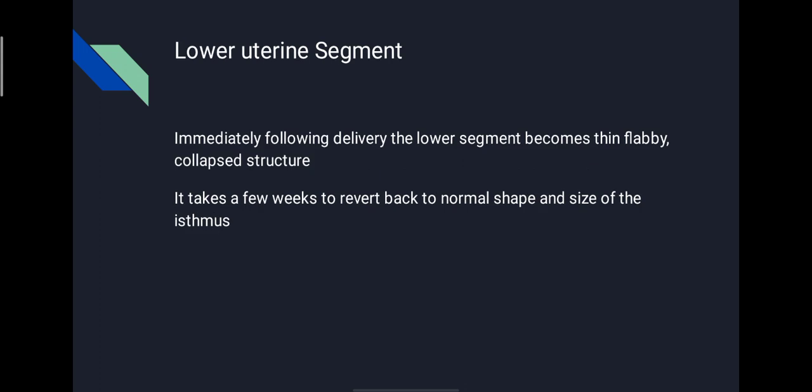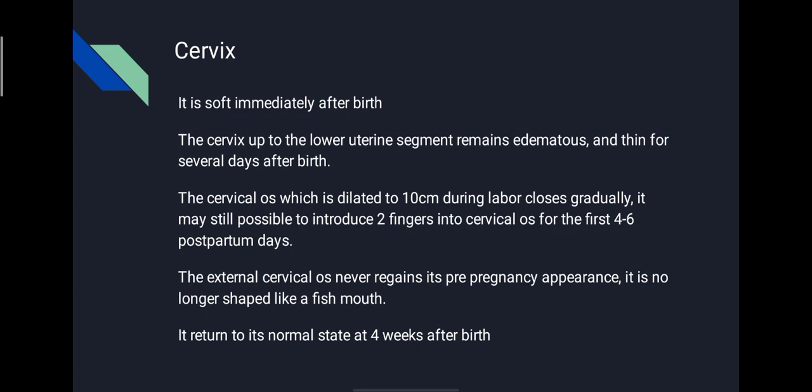Involution of the lower uterine segment: immediately following delivery, the lower segment becomes thin, flabby, and a collapsed structure. It takes a few weeks to revert back to the normal shape and size of the isthmus. Involution of the cervix: it is soft immediately after birth. The cervix up to the lower segment remains edematous and thin for several days after birth. The cervical os, which is dilated to 10 cm during labour, closes gradually. It may still be possible to introduce two fingers into the cervical canal for the first 4 to 6 postpartum days. The external os never regains its pre-pregnancy appearance, so a characteristic transverse slit occurs. Cervix returns to its normal state at 4 weeks after birth.